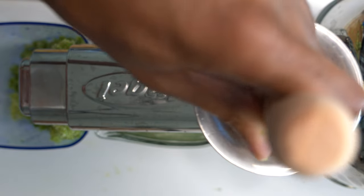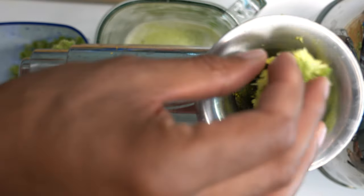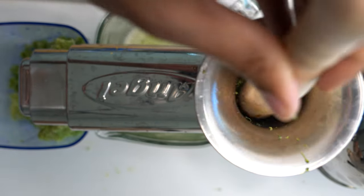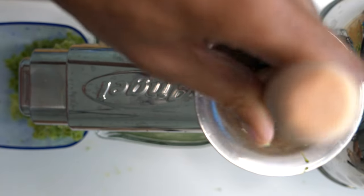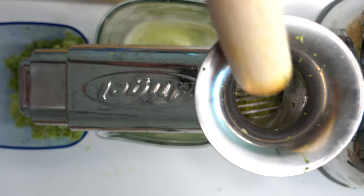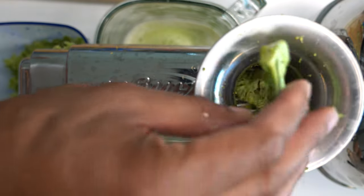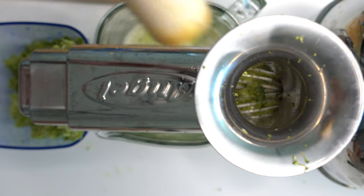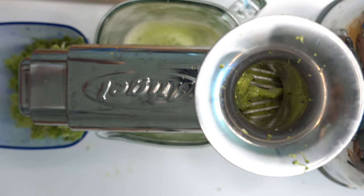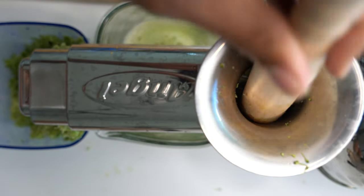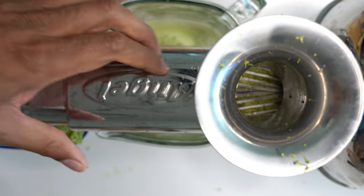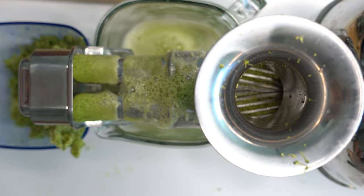And just a few more pieces of the broccoli to go in. And we have all of the broccoli within the juicer. Just give it a second so some more juice can go through.